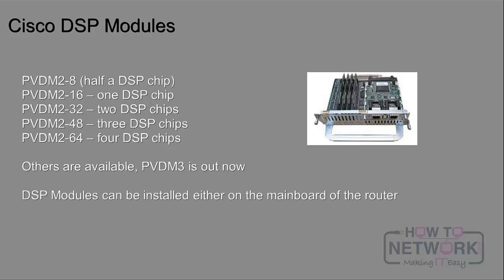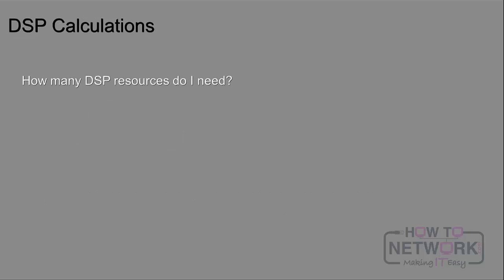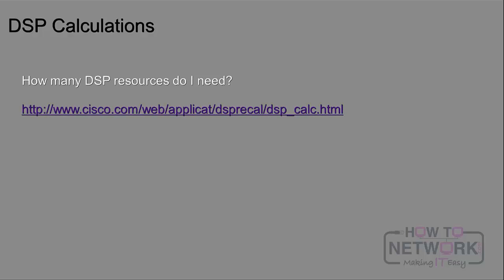DSP modules can be installed either on the main board of your router, or in a network module such as this NM-HDV. When figuring out how many DSPs you need, DSP calculations can be really easy or quite interesting. When planning for DSP resources, don't just plan off the top of your head — go to Cisco.com and use the DSP calculator. I'm going to jump out of the presentation right now to show you the DSP calculator.